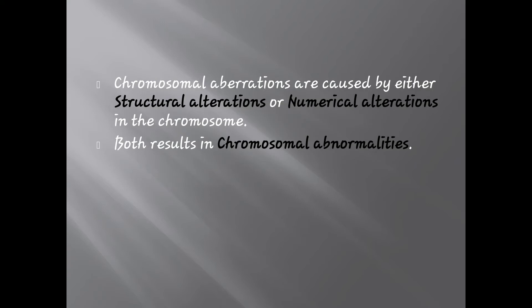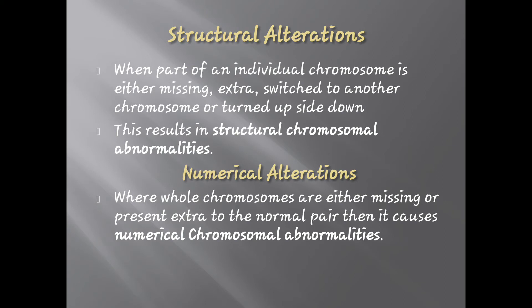Chromosomal aberrations are caused by either structural alterations — that means changes in the structure of the chromosome — or numerical alterations, that is changes in the number of chromosomes, and both result in chromosomal abnormalities. Structural alterations occur when part of an individual chromosome is either missing, present extra, switched to another chromosome, or turned upside down. Numerical alterations occur where whole chromosomes are either missing or present extra to the normal pair, causing numerical chromosomal abnormalities.